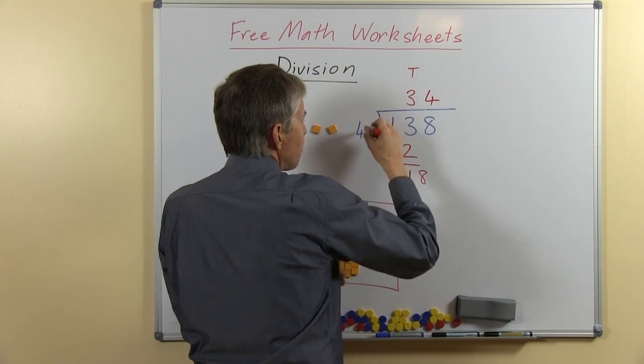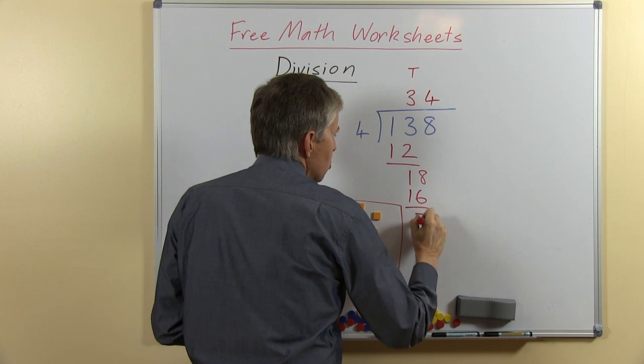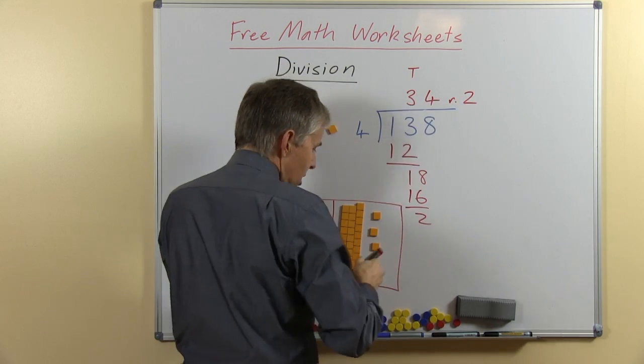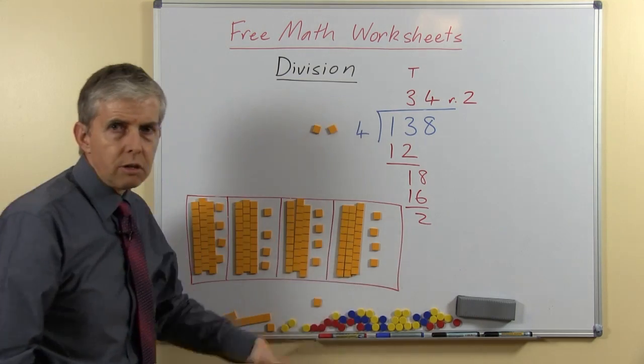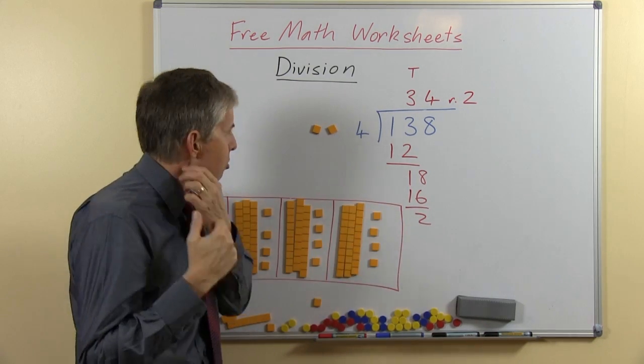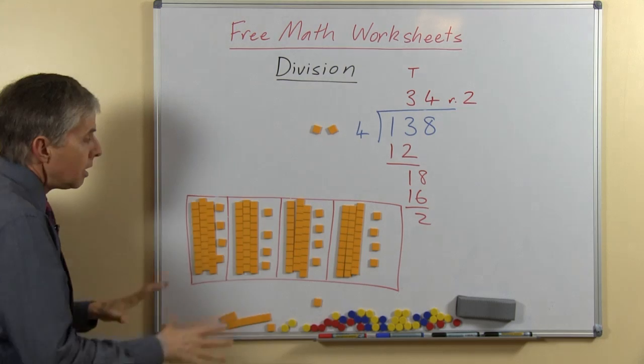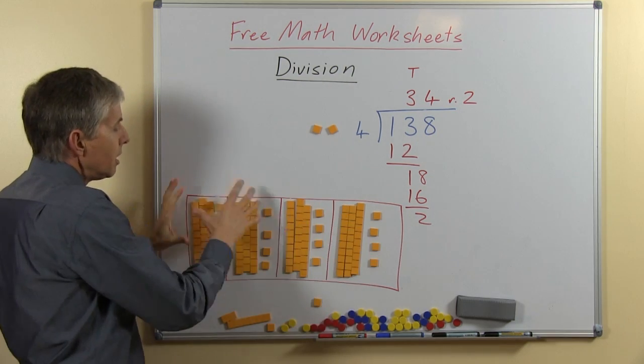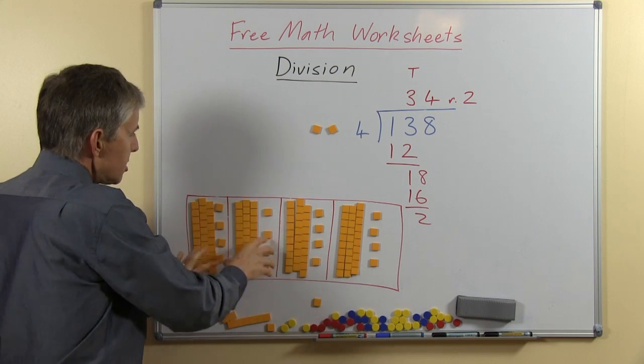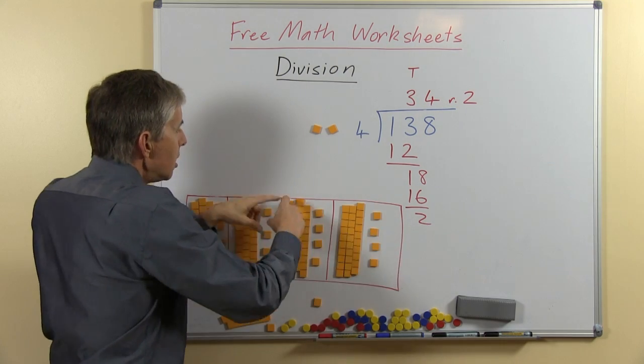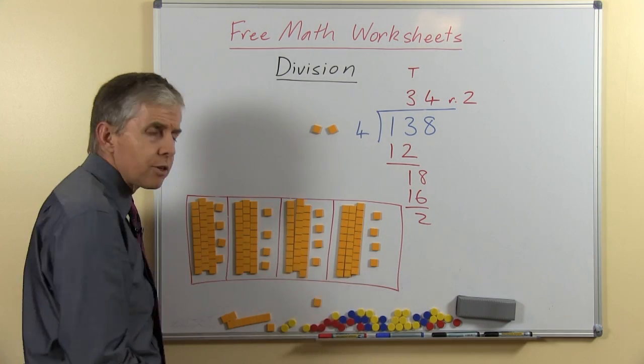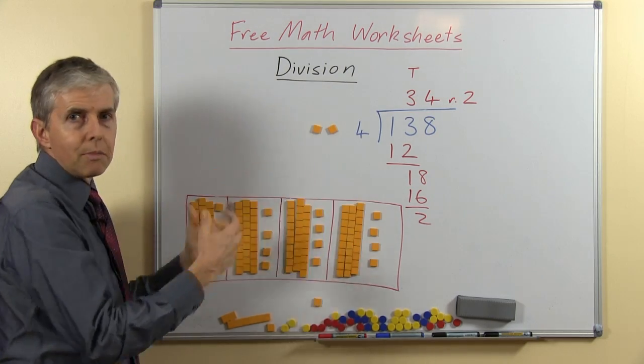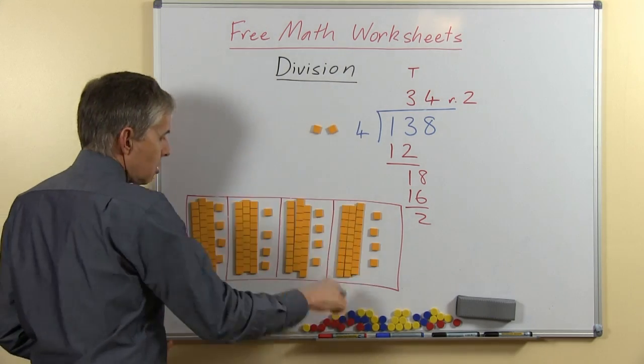So everybody gets 4, we write that up here, 4 ones, 4 4's are 16, of course there are 2 left, and there are different ways of writing the remainder. I usually write a lower case R with a dot. Now you can see from this arrangement down here that with the base 10 material it illustrates the answer, you can see 34 in each space, you can see that that's the 138, you could conceivably push it all back together and re-group and make it back into 138, there's 2 left.